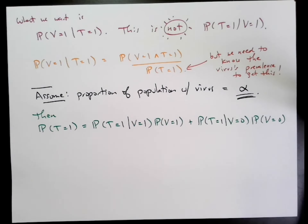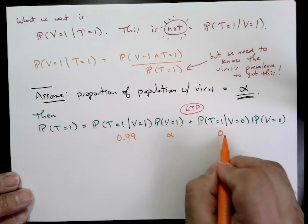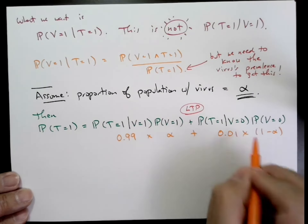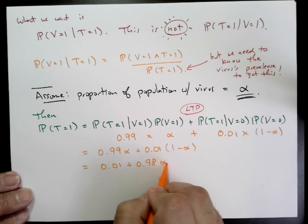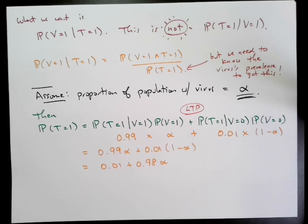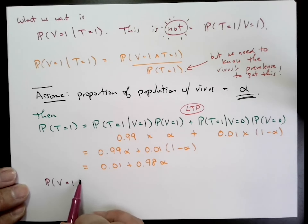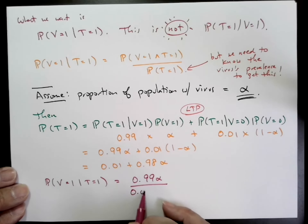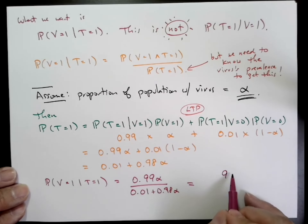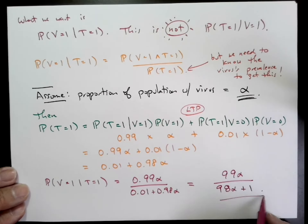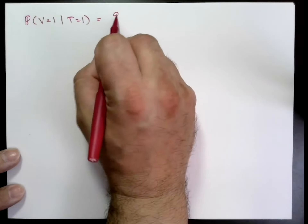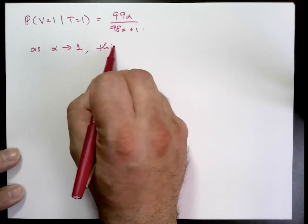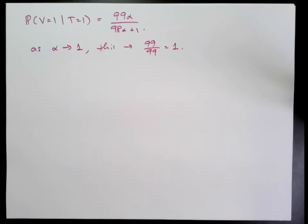Working it out, the probability that T equals one is 1% plus 98% times alpha, coming from two sources: actually getting the virus — that's the 0.98 alpha term — but there's also a 1% false positive rate. Putting all this together, the probability that V equals one given T equals one is the fraction 99 alpha over 98 alpha plus one. This probability depends on the prevalence of the virus, which is alpha.